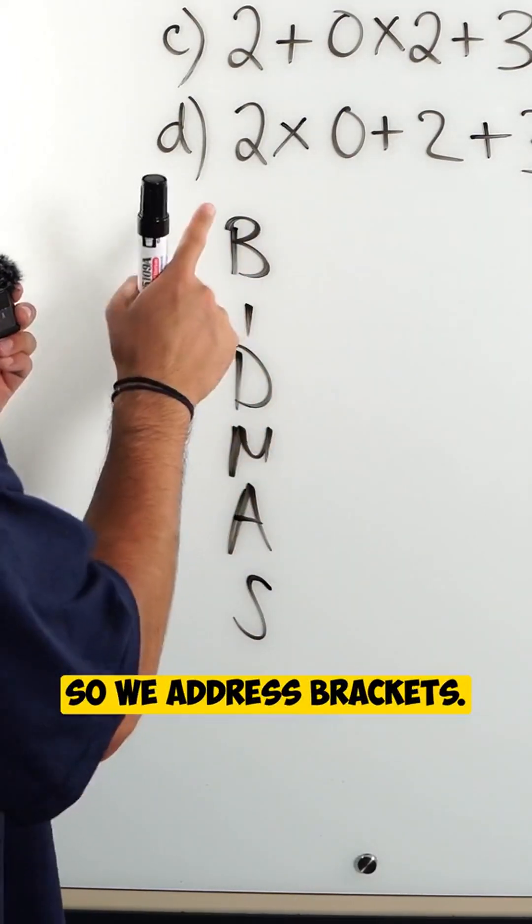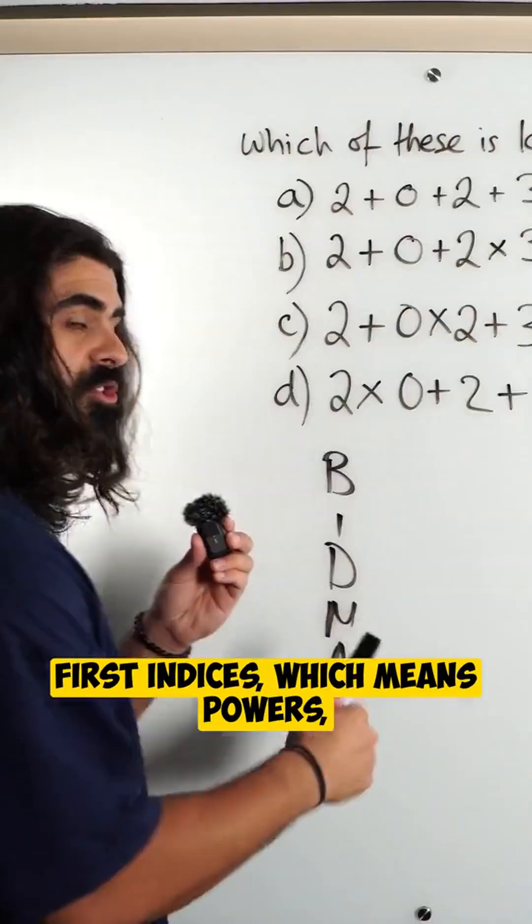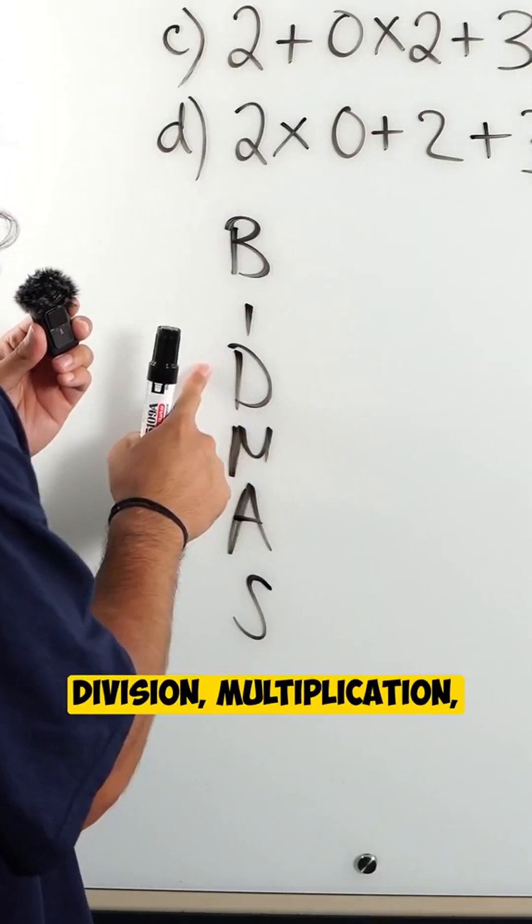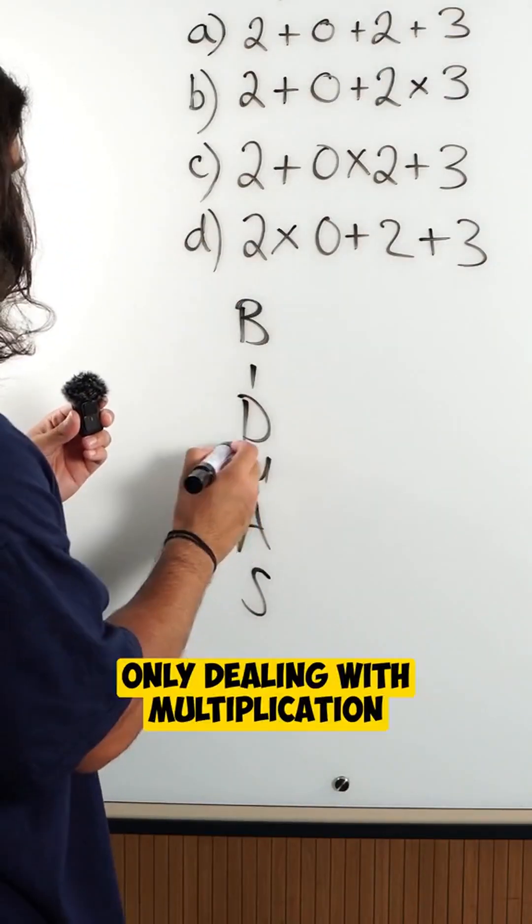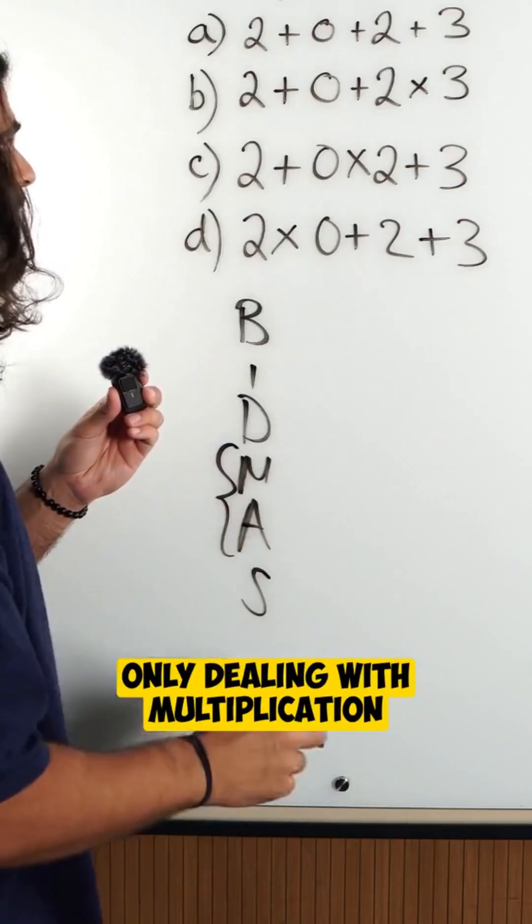So we address brackets first, indices which means powers, division, multiplication, addition, subtraction. Now in this question we are only dealing with multiplication and addition.